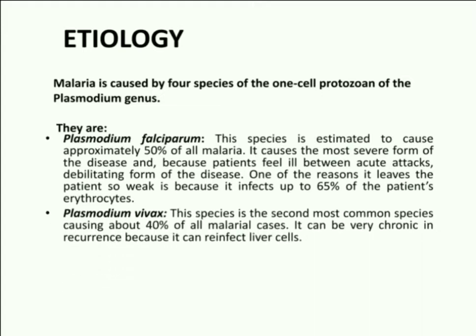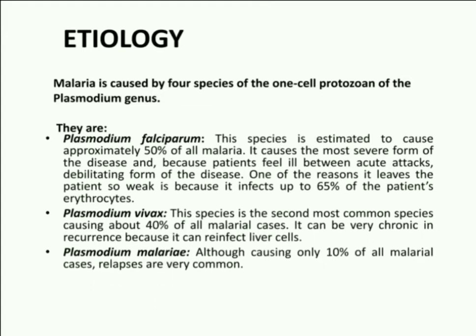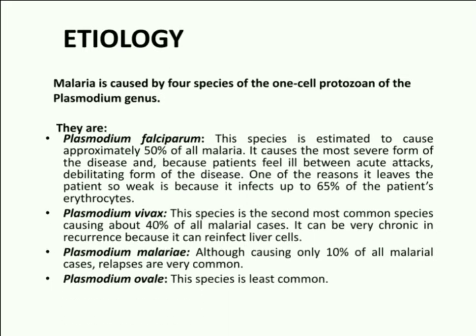Four species of the one-cell protozoan of the Plasmodium are Plasmodium falciparum, Plasmodium vivax, Plasmodium malariae, and Plasmodium ovale.